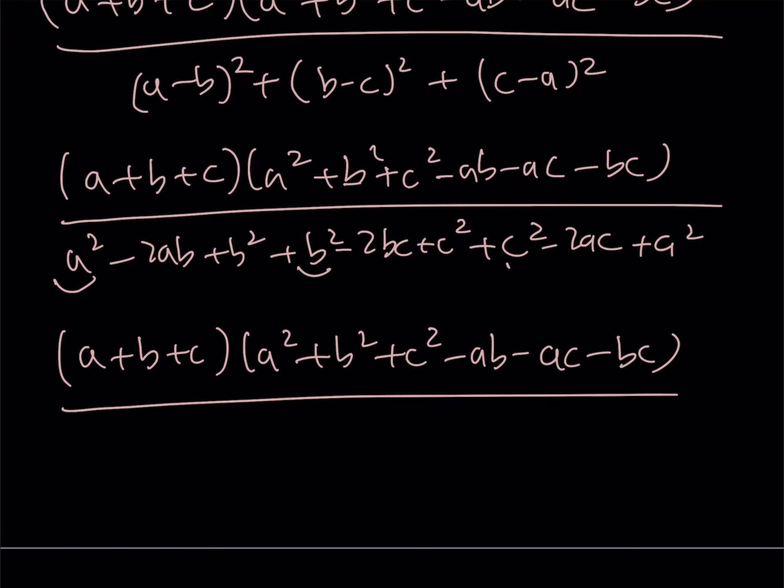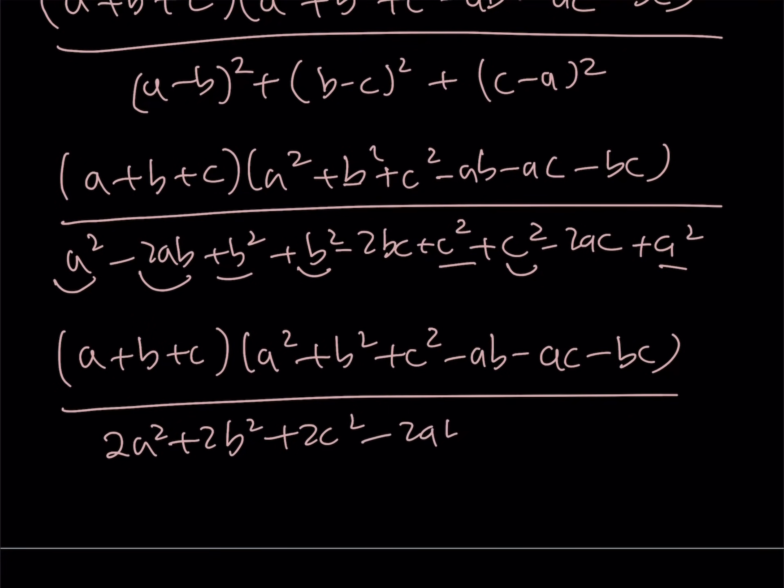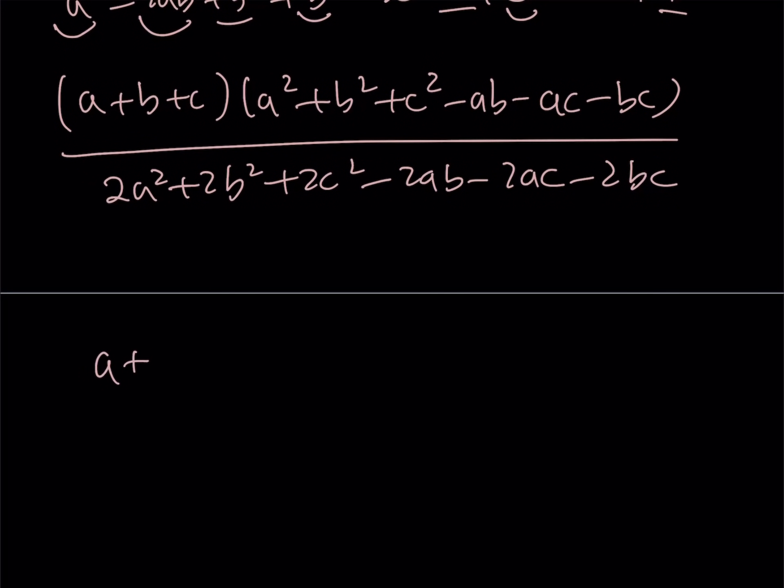The bottom is going to look like the following: a squared plus b squared plus c squared, but notice that they come twice. So, we kind of have like 2a squared plus 2b squared plus 2c squared. And then I got the negative 2ab minus 2ac minus 2bc. And does that look familiar? Now what happens at the bottom is we can factor out a 2.